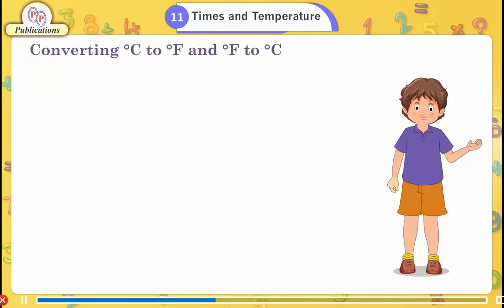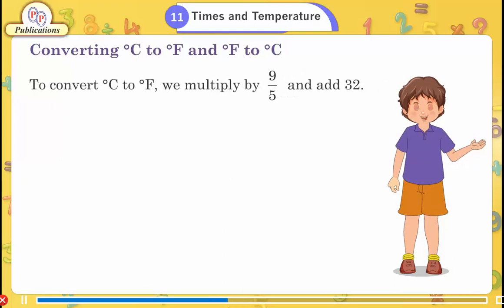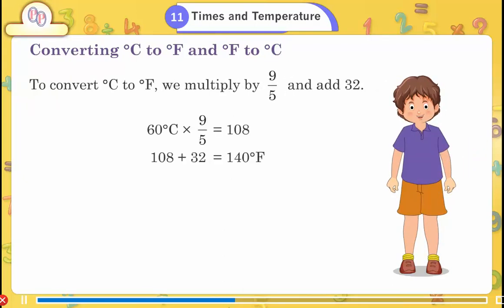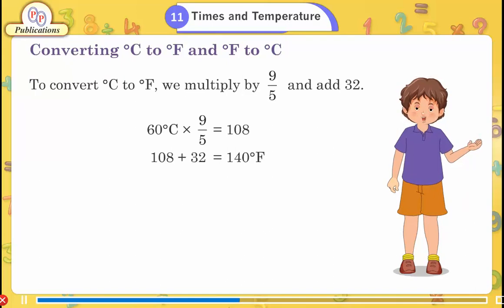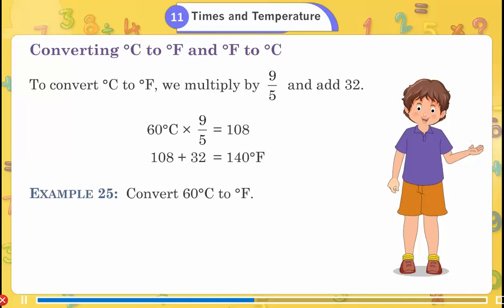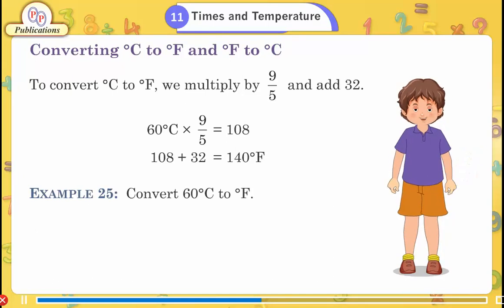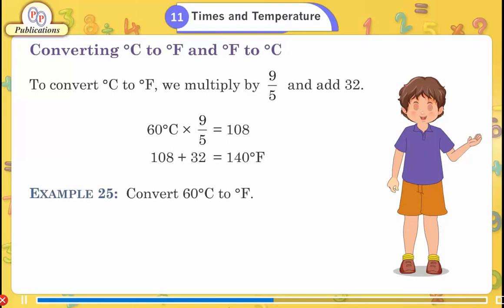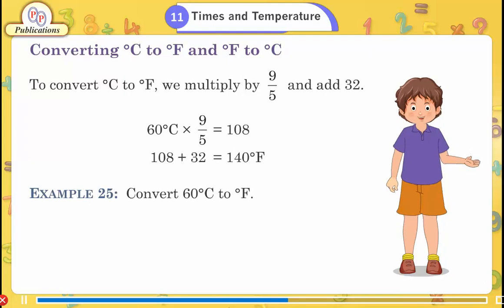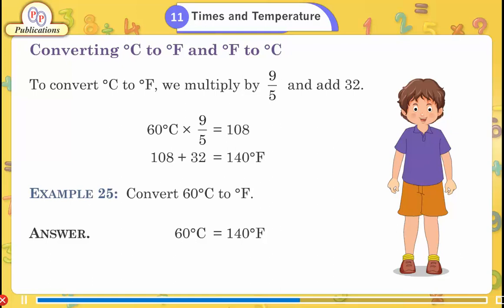Converting between Celsius and Fahrenheit. To convert degree Celsius to degree Fahrenheit, multiply by 9/5 and add 32. Example 25: Convert 60°C to Fahrenheit. 60 × 9/5 = 108; 108 + 32 = 140°F. Answer: 60°C = 140°F.